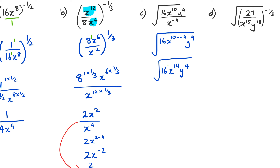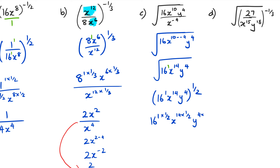At this point, remember that 16 has a power of 1. Because we're dealing with a square root, we rewrite this as 16 to the power of 1, x to the power of 14, y to the power of 4, all raised to the power of half. We multiply the powers: 16 to the power of 1 times half is square root of 16 which equals 4; x to the power of 14 times half is 7; and y to the power of 4 times half gives you 2. So the final answer for question C is 4x to the power of 7 y to the power of 2.